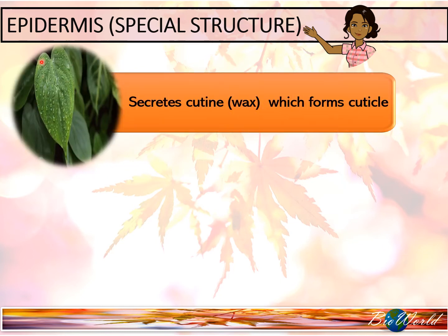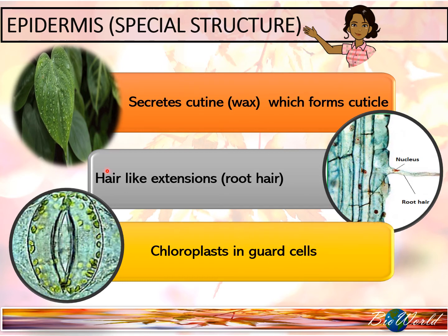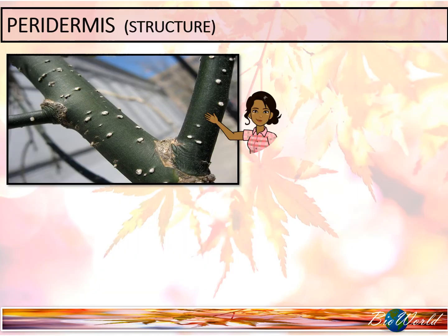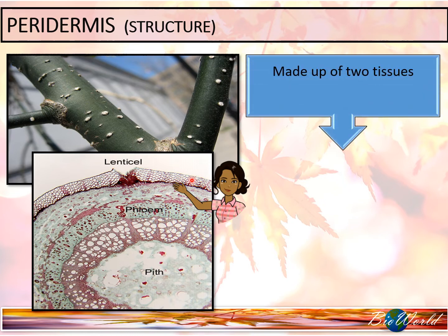Although epidermis can be found on the leaf, stem, root, flowers, and fruits, some have special structures. For example, the epidermis on leaves is able to secrete a wax called cutin, which forms the cuticle layer on the leaf, making it waterproof. In the roots, epidermis can form hair-like extensions called root hair, to help increase the rate of water absorption. Additionally, the leaves also have special epidermis cells called guard cells that make up the stomata. These guard cells have chloroplasts that enable them to do photosynthesis. Here is a microscope image of the peridermis layer, which is made up of two tissues.